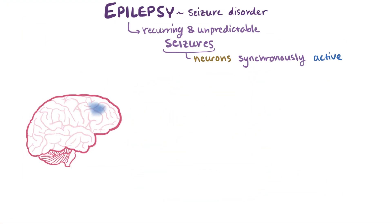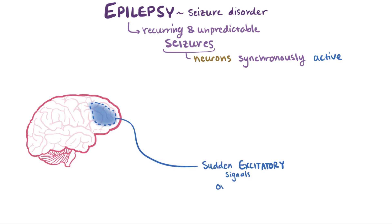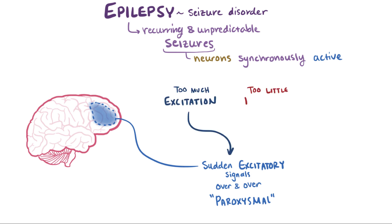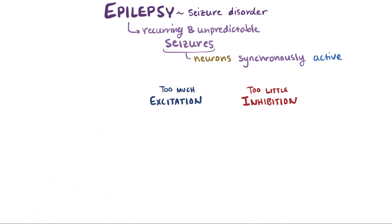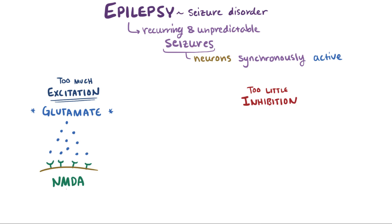During a seizure, clusters of neurons in the brain become temporarily impaired and start sending out a ton of excitatory signals over and over again, and these are sometimes said to be paroxysmal. These paroxysmal electrical discharges are thought to happen due to either too much excitation or too little inhibition. The main excitatory neurotransmitter in the brain is glutamate, and NMDA is the primary receptor that responds to glutamate by opening ion channels that let calcium in, a positive ion that tells the cell to send signals.